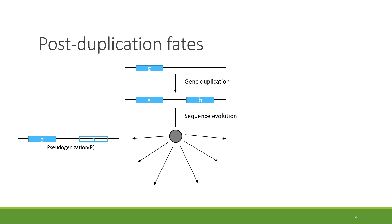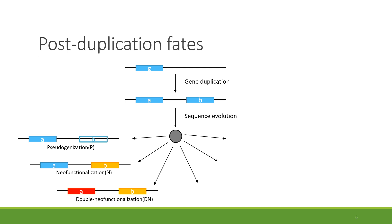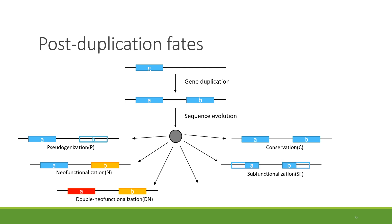The first fate is called pseudogenization, where one of the duplicated genes loses its function. The second is called neofunctionalization, where one of the duplicated genes finds a new function. The third is called double neofunctionalization, where both duplicated genes find new functions different from each other and different from the original gene function. Another fate is called conservation, where both duplicated genes conserve the function of the original gene.